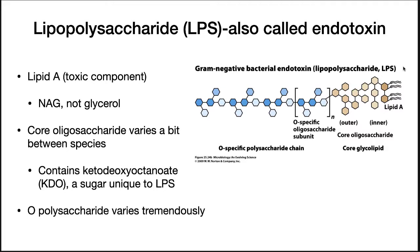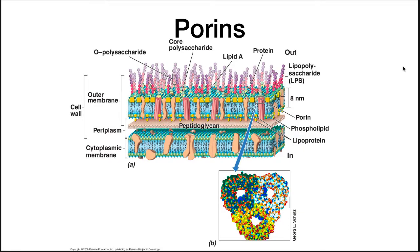Pathogens will alter their O-polysaccharide to hide from the immune system. Your immune system reacts to the presence of LPS, since this is unique to bacteria, and marshals an immune response against it. If you are exposed to too much LPS, your immune system will react so strongly that it can kill you. Thus, LPS is also known as endotoxin. The outer membrane is not a permeability barrier because it contains porins — proteins that provide pores through the membrane that many molecules can pass through. Some porins are specific and will only allow certain molecules through, while others are nonspecific.